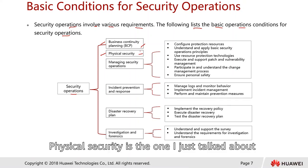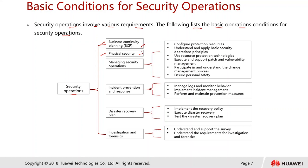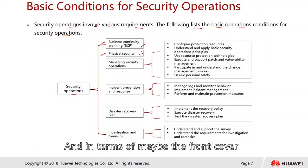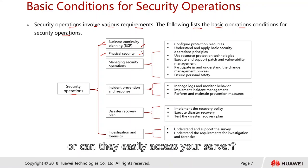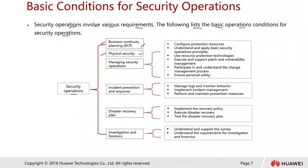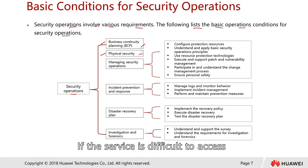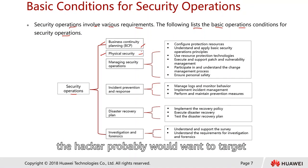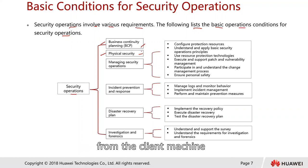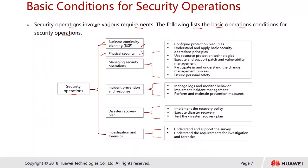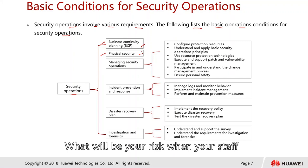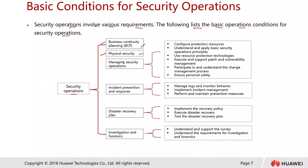Physical security is about who can physically access your company's server. How do you secure the server — can people easily open your cabinet, access your server, pull out your hard disk or tape drive? These are physical security concerns. Also, if the server is difficult to access, hackers may target the client machine to eventually gain access to the server. What about if a laptop is stolen — what is your risk when an employee loses a laptop?